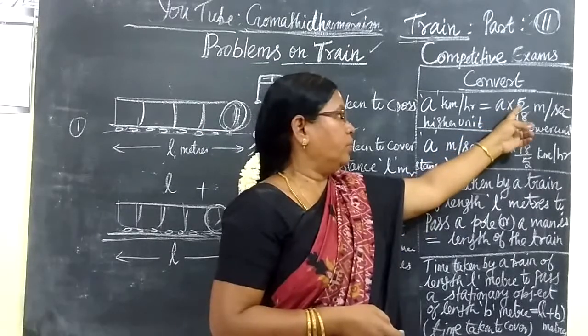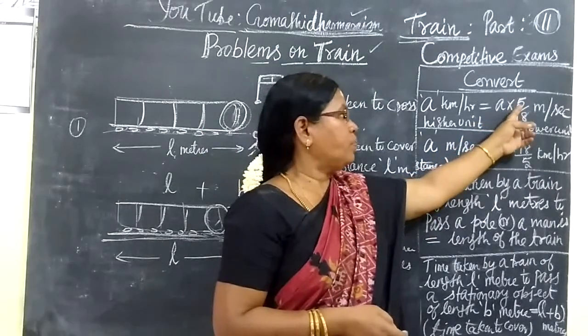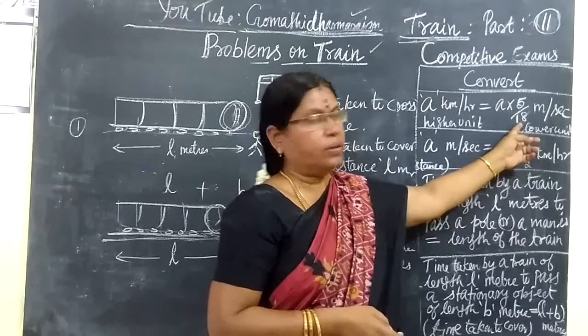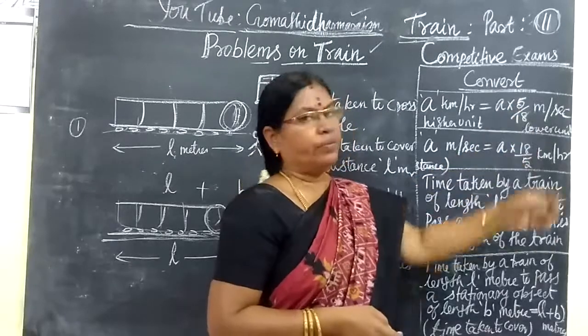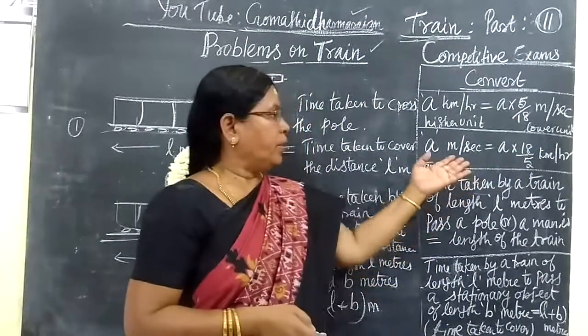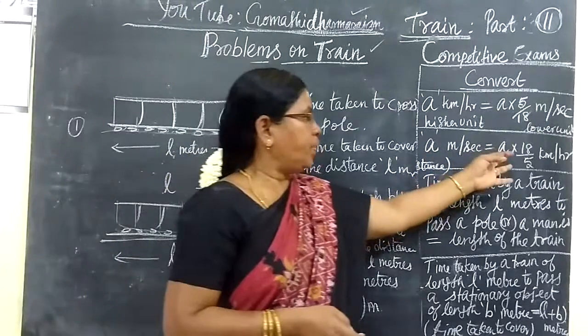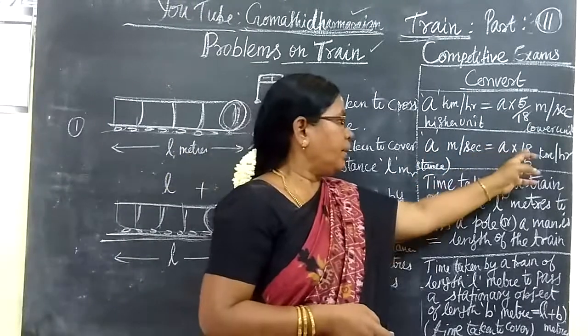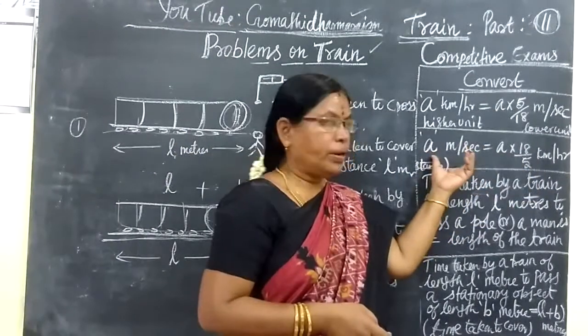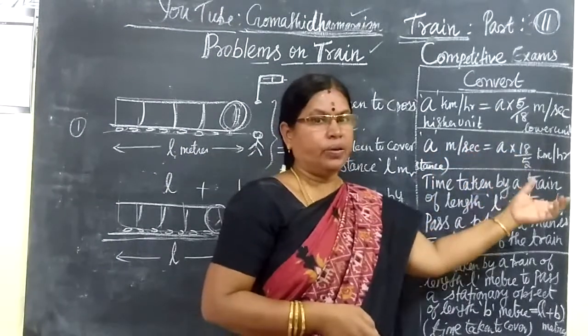Since 5 is the smaller number compared to 18, you write 5/18 when converting from higher to lower unit. And 18/5 when converting from lower to higher unit.